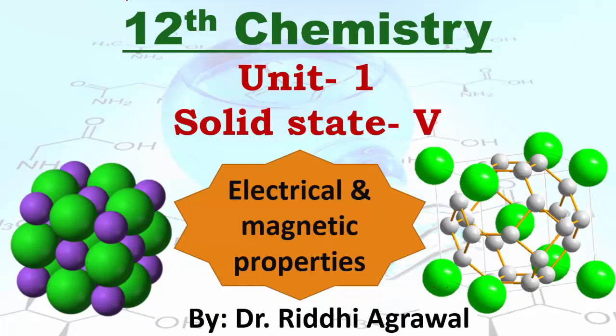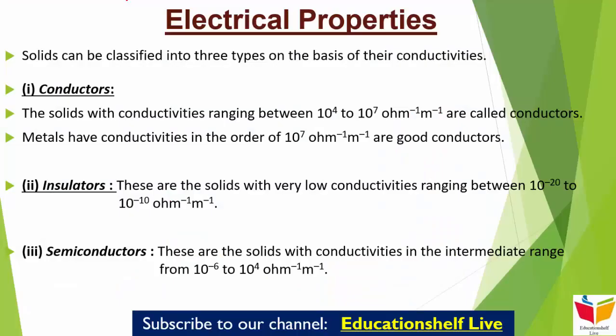चलते हैं हमारे lecture की तरफ। आज का first part रहेगा हमारा electrical properties। अब solids जो होते हैं, उन्हें बहुत amazing range होती है electrical conductivity की — 27 orders of magnitude — जिनकी range कहाँ से कहाँ तक होती है: 10 raised to the power minus 20 से लेके 10 raised to the power 7 per ohm per meter तक।